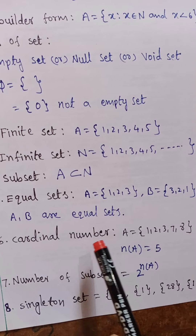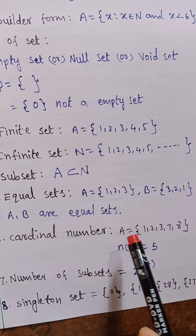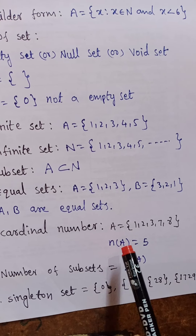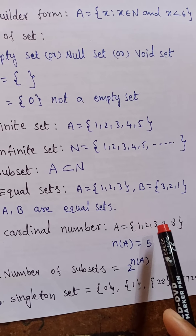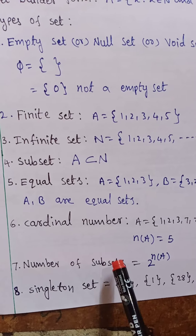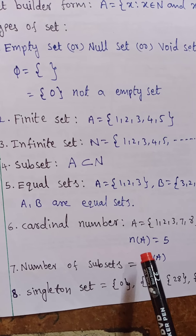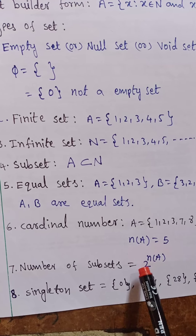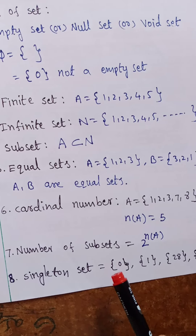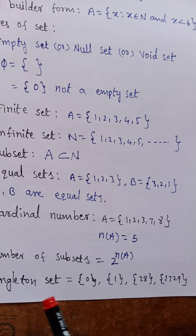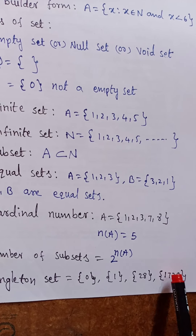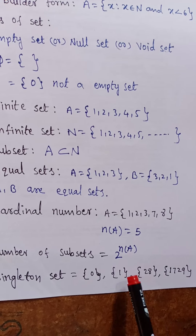Sixth one: cardinal number. Cardinal number means the number of elements in a set. A equal to {1, 2, 3, 7, 8} — so n(A) equals how many? 1, 2, 3, 4, 5 — so 5 is the cardinal number. Seventh one: number of subsets equals 2 raised to n(A), where n(A) is the cardinal number. Eighth one: singleton set — a set containing only one element. For example: {0}, {1}, {28}, {17}, {29} — the Ramanujan number. These are called singleton sets.